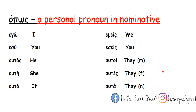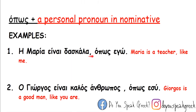When we use όπως with a personal pronoun, we always use the nominative case of personal pronouns. For example: Η Μαρία είναι δασκάλα όπως εγώ — after όπως we use the nominative εγώ. Another example: Ο Γιώργος είναι καλός άνθρωπος όπως εσύ.